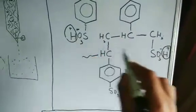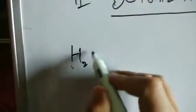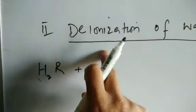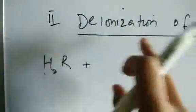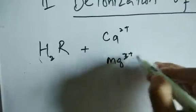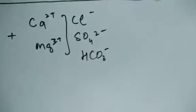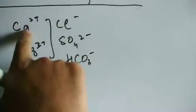The resin has H+ sites — we write H2 since the ions are divalent. This resin is treated with the same hard water sample containing calcium chloride and magnesium chloride. In deionization, we need to remove all ions including chloride, bicarbonate, sulfate, calcium, and magnesium. So we treat: the H sites get replaced by calcium and magnesium ions from the sample.